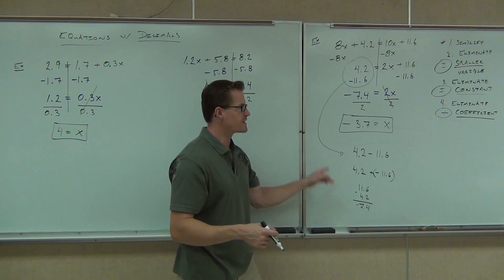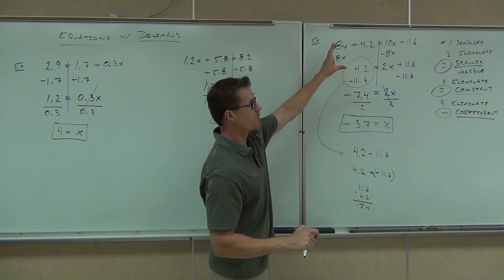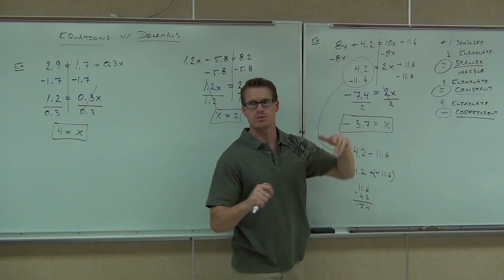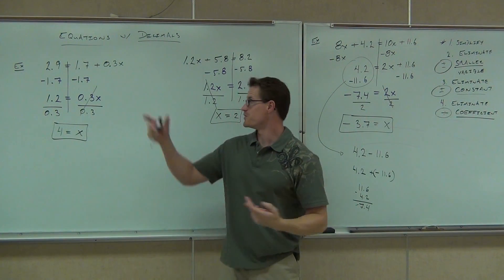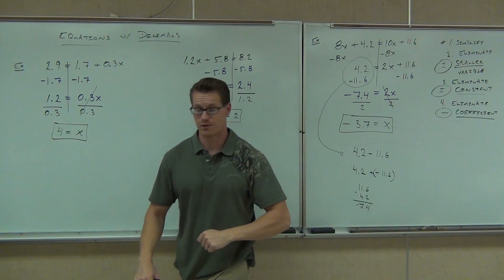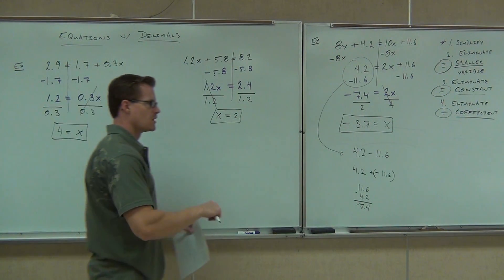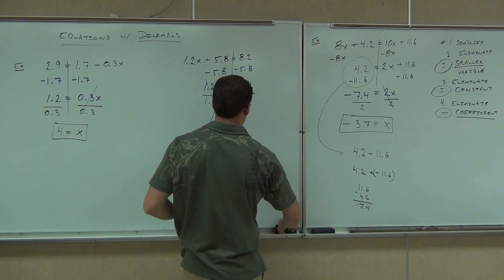I kind of omitted that step, but that's kind of an important one. Okay, so we're simplifying if we can. If you can't, no big deal. You're getting rid of the smaller variable if you have two of them. If not, no big deal. Then we're getting rid of a constant term by addition and subtraction, and then finally we're dividing and getting rid of our coefficient. Try one of these on your own. We'll do one more example together. I'll give you one of your own, and that'll end our section here.